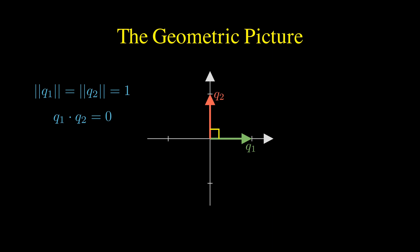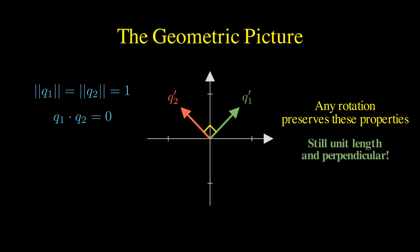Now here is something beautiful. If we rotate both of these vectors by the same angle, they remain orthonormal. The rotation preserves their unit length and their perpendicularity.